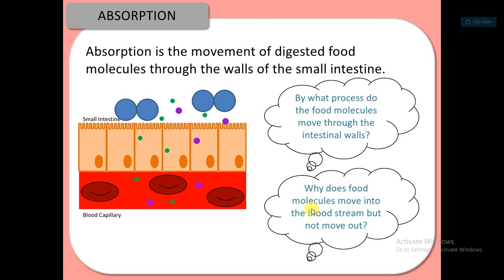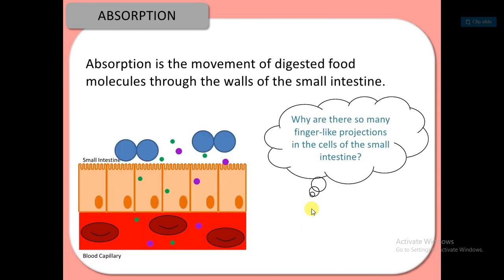By what processes do food molecules move through the intestine walls? Why do food molecules move into the bloodstream but not move out? Why are there so many finger-like projections in the cells of the small intestine?